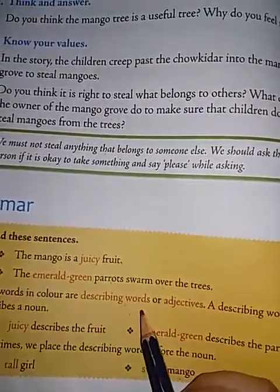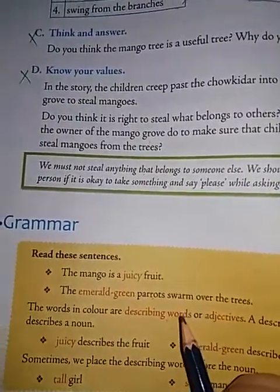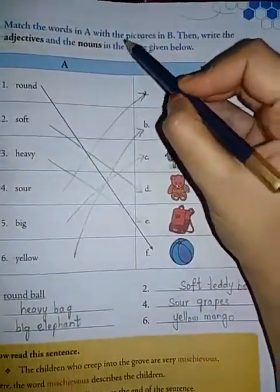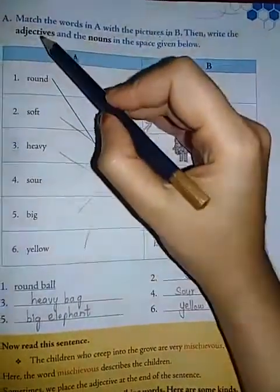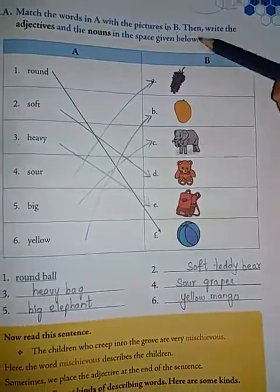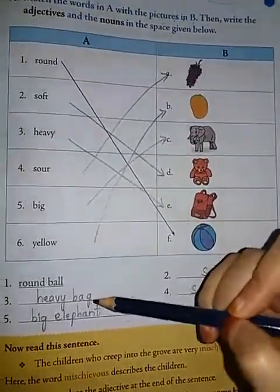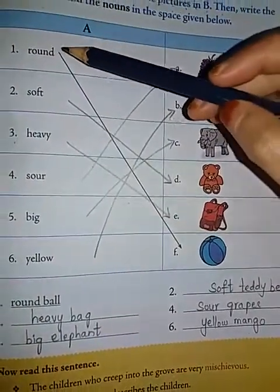You will be getting a separate video of this adjective part. So, now let us see the next bit. Match the words in A with the pictures in B. Then write the adjectives and the nouns in the space given. First you have to match, then afterwards you have to write here. The first one has already been done.